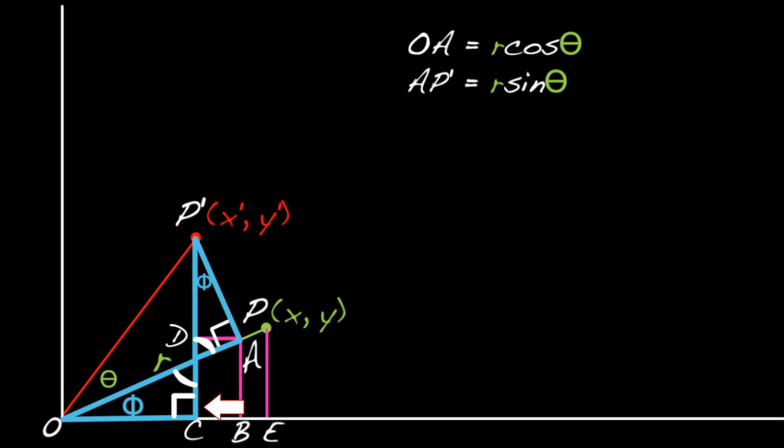Notice also that this angle is 90 degrees, as is this angle, meaning that the two triangles share two angles. They must also share the third angle, because all three angles must add up to 180 degrees. Thus, CP prime A is phi.